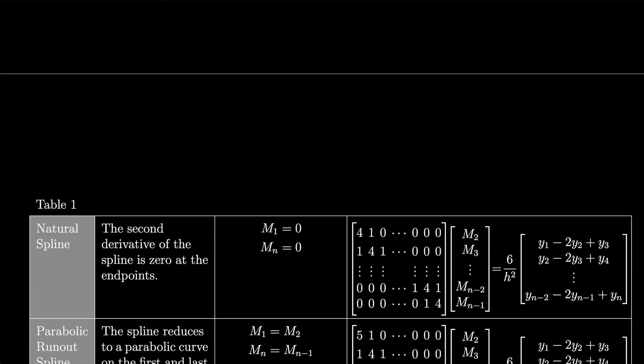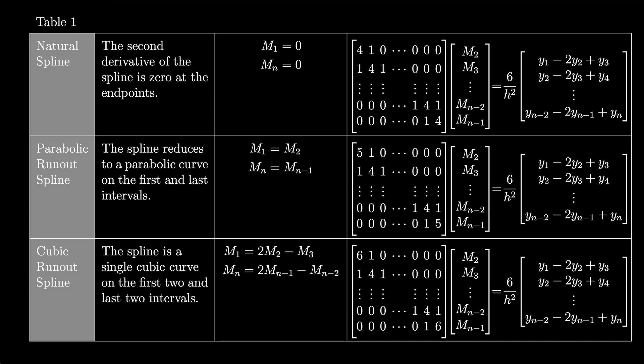Here's a couple of standard restrictions, but these are not the only ones. The first one gives us the natural spline if we take m1 equal to 0 and mn equal to 0. So the second derivative of the spline is 0 at the endpoints. That gives us a matrix of coefficients over here